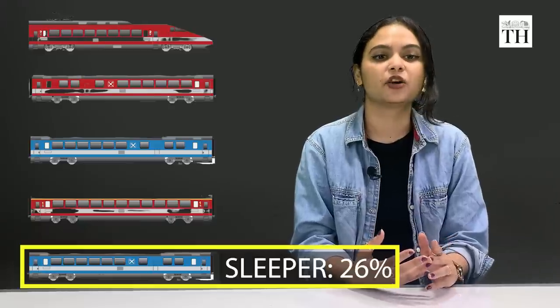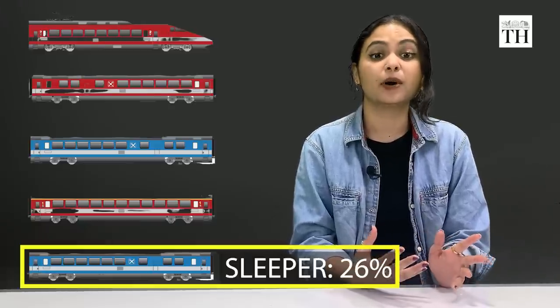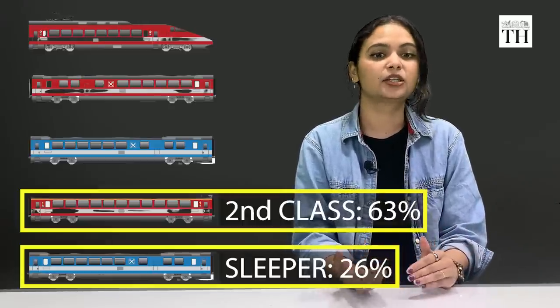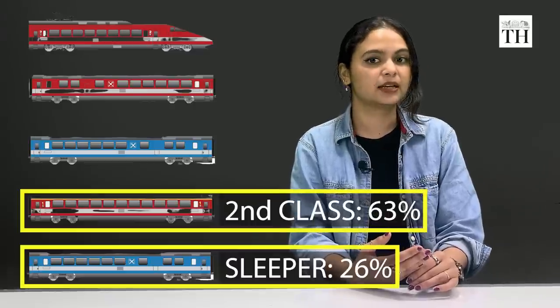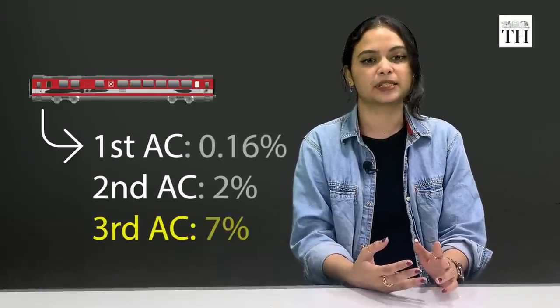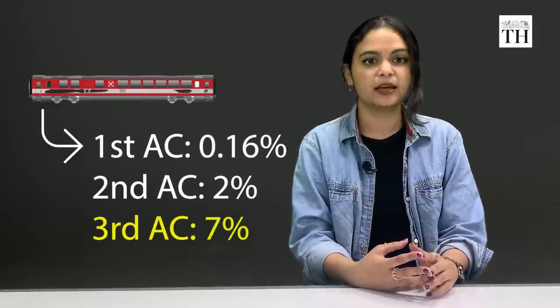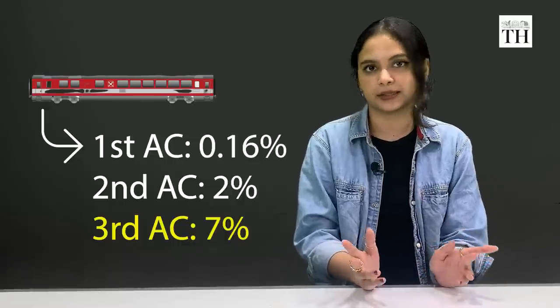Forming 26% of passenger kilometers traveled, while the share of second class decreases to 63%. Third AC forms 7% of passenger kilometers, and the rest of the classes form a pretty insignificant amount.